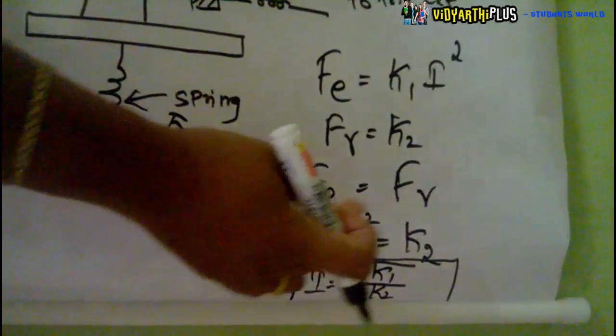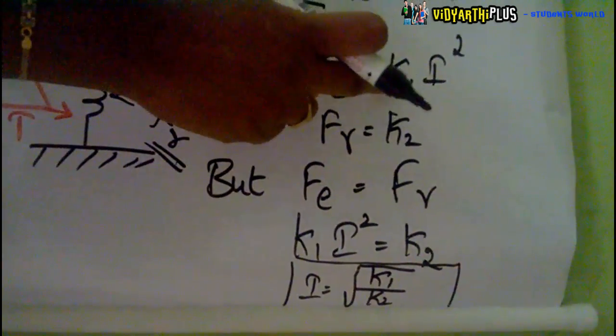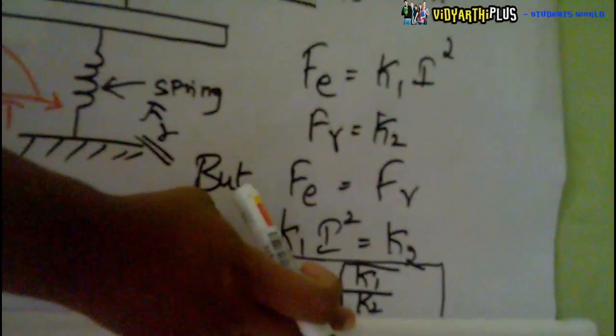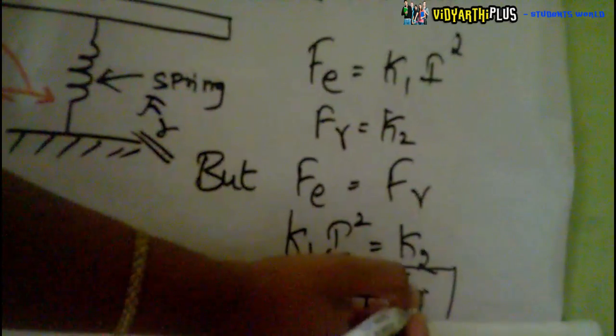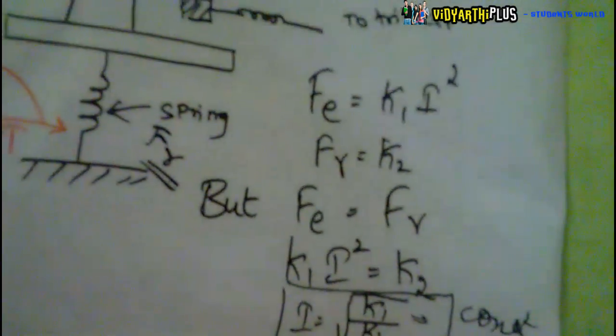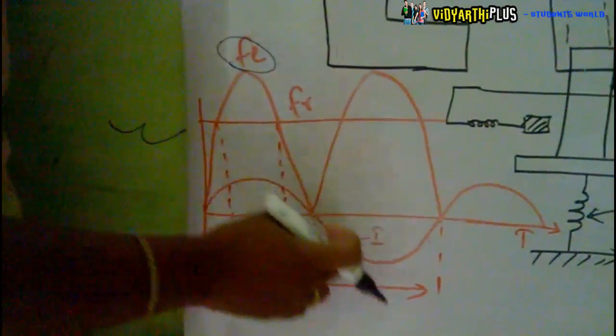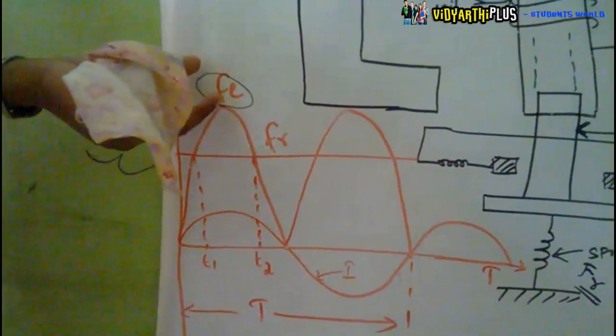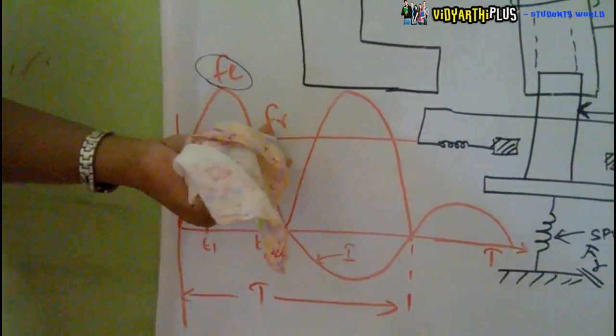Setting the electromagnetic force K1·I² equal to the restraining force K2 gives: I = √(K2/K1), which is a constant value called I1. In the graph, the electromagnetic force appears as a sinusoidal wave while the restraining force is a constant straight line. This illustrates that the electromagnetic force must equal the restraining force, making the pickup current a constant value.